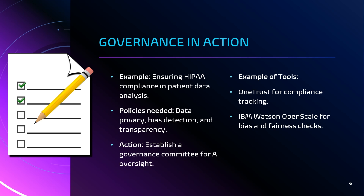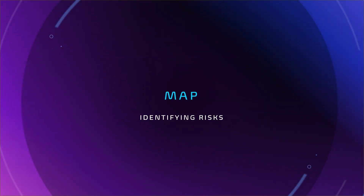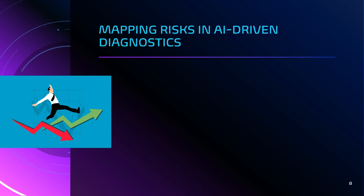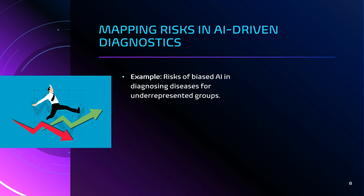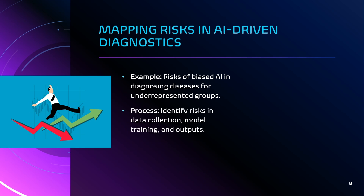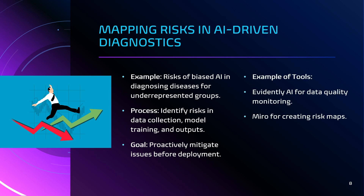Mapping AI risks in AI-driven diagnostics is critical because it allows you to identify your risks. The risk of AI bias in diagnosing diseases for underrepresented groups could result in a lawsuit. You need to establish processes that identify risks in data collection, models, and training outputs. The goal is to proactively mitigate issues before deployment. Example tools include Evidently AI for data quality monitoring and Miro for creating risk maps.